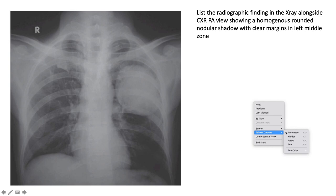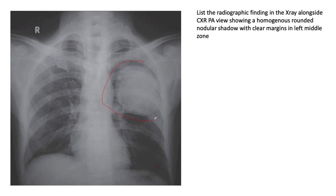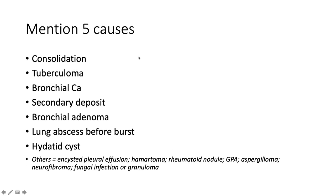This is a PA film showing a homogenous, rounded, nodular shadow with clear margins in the left middle zone — a solitary pulmonary nodule. Five causes include consolidation and tuberculoma (infective), secondary deposit, bronchial carcinoma or bronchial adenoma (metastatic), lung abscess, and hydatid cyst. Less common causes include encysted pleural effusion, haematoma, rheumatoid nodule, granulomatosis with polyangiitis (formerly Wegener's), aspergilloma, neurofibroma, fungal infection, or granuloma.